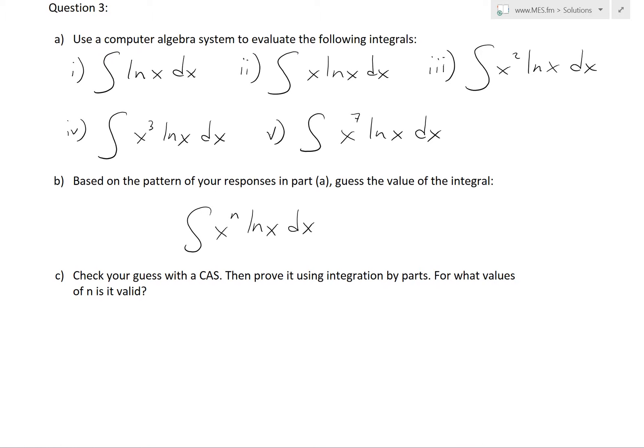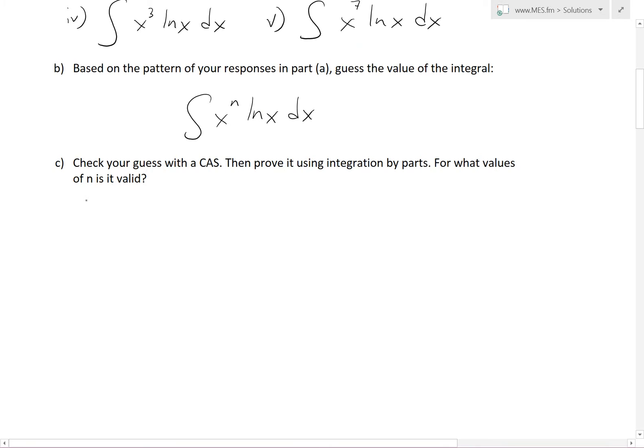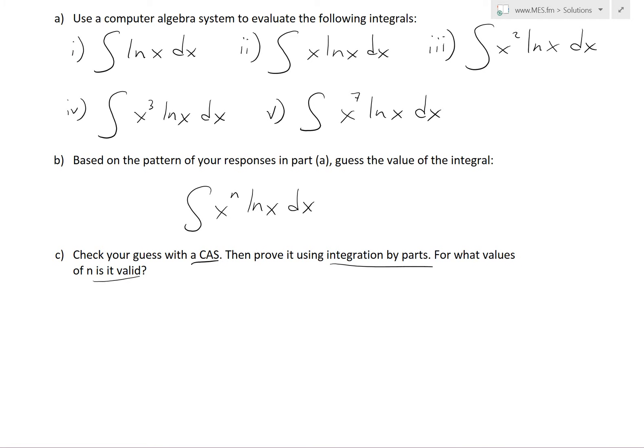based on the pattern of your responses in part A, guess the value of the integral right here, x power of n, ln x dx. And then basically check, part C is check your guess with a CAS, then prove it using integration by parts, and then find for what values of n is it valid.